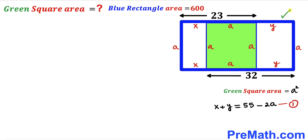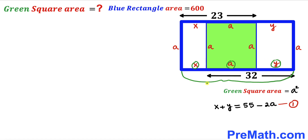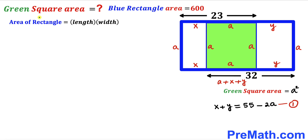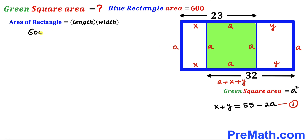Now let's focus on the blue rectangle. Its vertical side length is a, and its horizontal dimension is a + x + y. Recalling the area of a rectangle formula — area = length × width — the length is a + x + y and the width is a. Since the blue rectangle's area is 600 square units, we set up: 600 = a × (a + x + y).